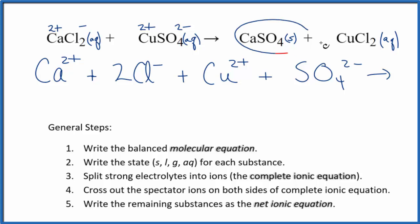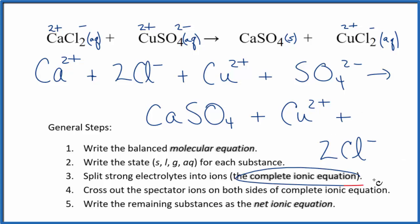For the products, we don't split solids apart in net ionic equations. So we're just going to call this CaSO4, calcium sulfate. Keep it together. Plus, we said copper 2 plus, and then a negative here. So we have copper 2 ion again, plus we have 2 of these chloride ions, just like the reactants. So this is the complete ionic equation.